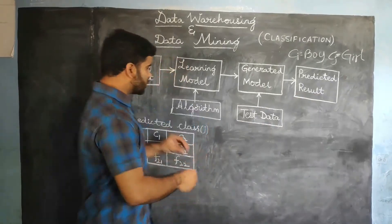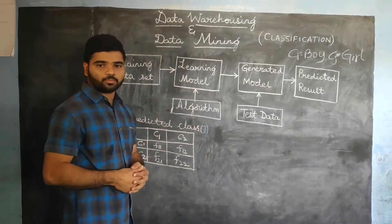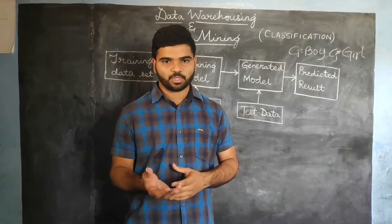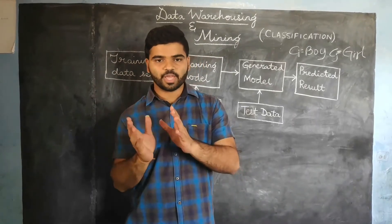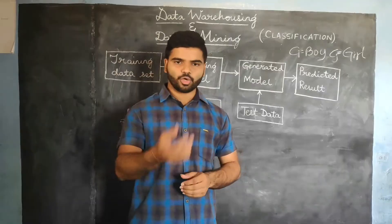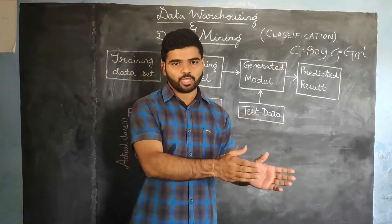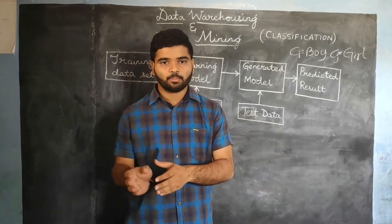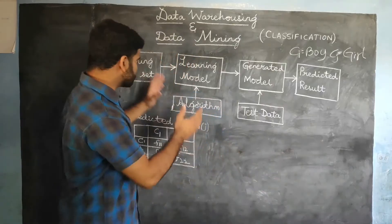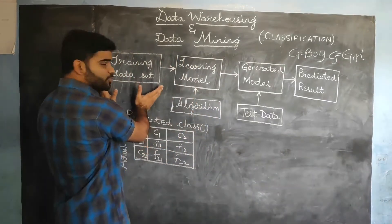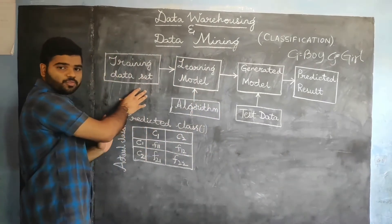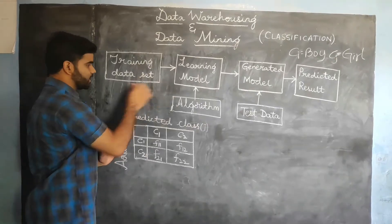To make a clear view of this, let us assume an example of a baby. Compare the baby with the system. We are going to train the baby to identify a boy and a girl by showing some persons. Similarly, we are going to train the system by giving some training data set consisting of pictures of boys and girls.